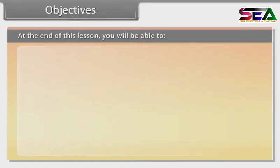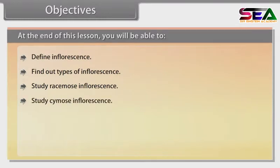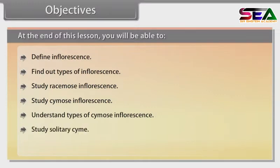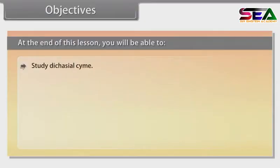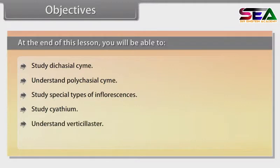Objectives: At the end of this lesson you will be able to define inflorescence, find out types of inflorescence, study racemose inflorescence, study cymose inflorescence, understand types of cymose inflorescence, study solitary cyme, understand monocasial cyme, study dicasial cyme, understand polycasial cyme, study special types of inflorescences including cyathium, verticillaster, and hypanthodium.